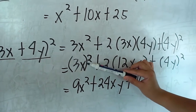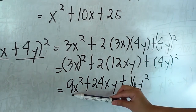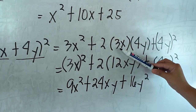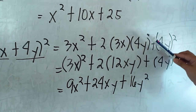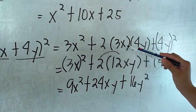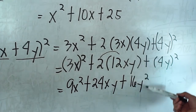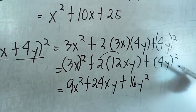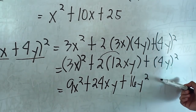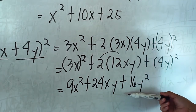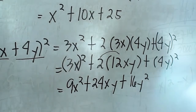We simplify: 3x squared is 9x squared. And 3x times 4y is 12xy, and we multiply it by 2, so 2 times 12xy is 24xy. Then 4y squared is 16y squared. So our final answer is 9x squared plus 24xy plus 16y squared.